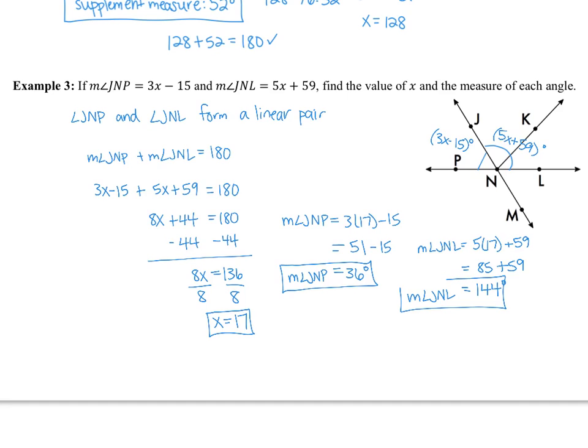Check: 144 plus 36 gives 180, so the answer is correct. That's all the examples for lesson 1-5.